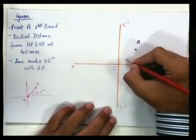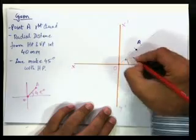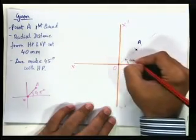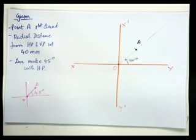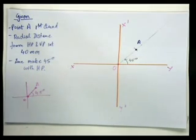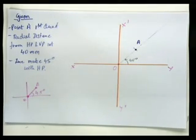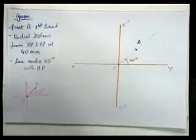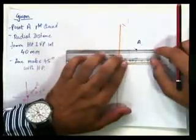So now what next has to be done is that its projections have to be drawn on the vertical plane and the horizontal plane. So for doing that, what we need to do is first of all I need to drop the shadow of this point on the VP and HP. So I'll just draw the shadows of this point on VP and HP at M and N.